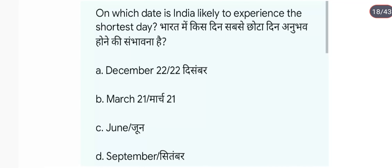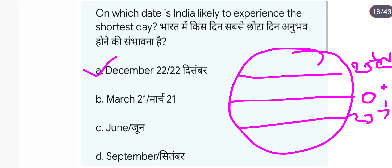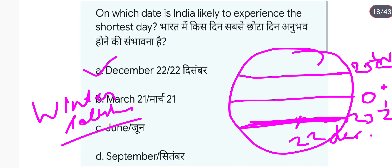On which date is India likely to experience the shortest day? India में shortest day होता है 22 December को। जब sun की किरणें Tropic of Capricorn (23.5° south) पर सीधी पड़ती हैं, तो Northern Hemisphere में shortest day होता है — यह 22 December को होता है। इसको winter solstice कहते हैं। तो answer है 22 December।